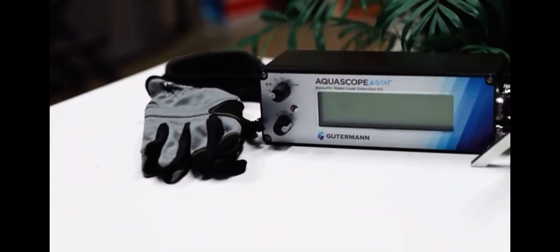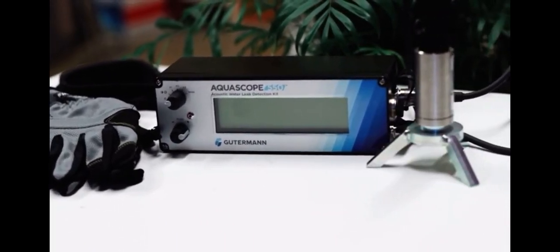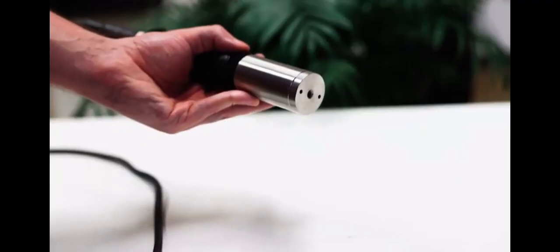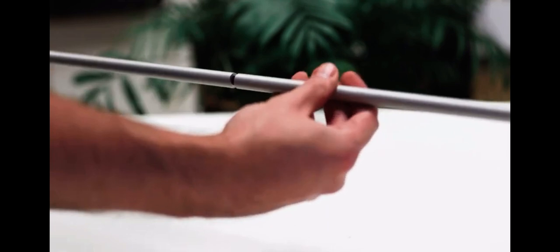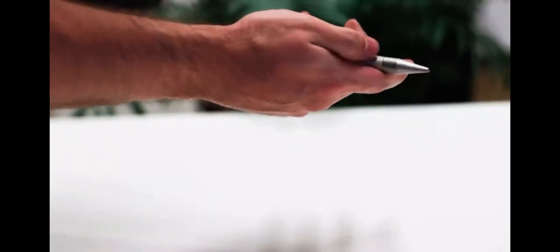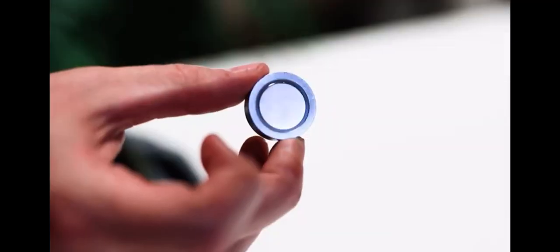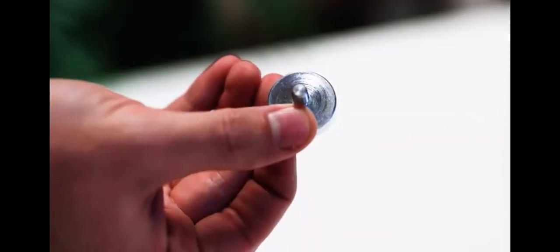For direct listening on valves or to use as a sounding stick, attach together the three-part listening rod and thread the rod into the base of the hand probe. For listening on hard surfaces like pavement, attach the tri-foot to the hand probe using the magnetic attachment.